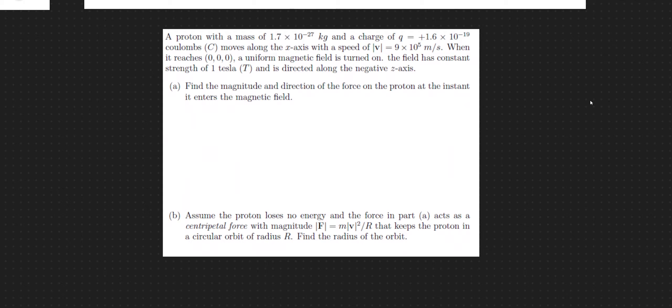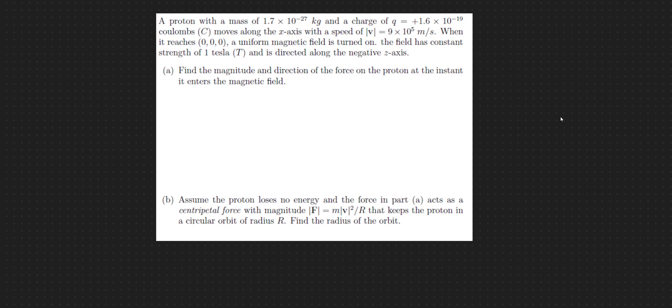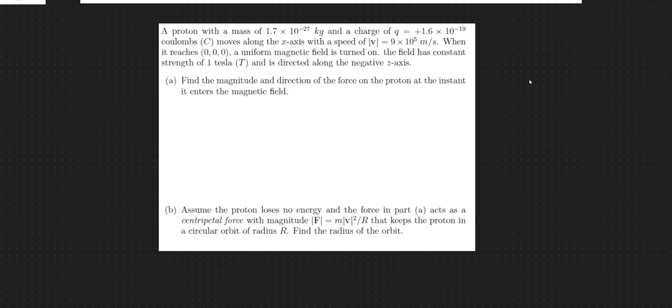All right. So let's look at an example. This might look scary to some of you, especially if you haven't done an electromagnetism class. So here we have a proton with a certain mass, 1.7 times 10 to the negative 27th kilograms, and a charge of 1.6 times 10 to the negative 19th coulombs. It's a unit of charge. It moves along the x-axis with this speed, 9 times 10 to the 5th meters per second. And then as soon as it reaches the origin, a uniform magnetic field is flipped on, and the strength of this magnetic field is 1 tesla directed along the negative z-axis. So that is, the magnetic field is pointing sort of downward with the strength of 1 tesla. And we want to find the magnitude and direction of the force on the proton, and then we're going to work out, so let's look at a visual of this.